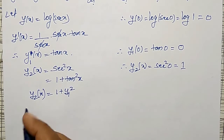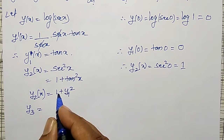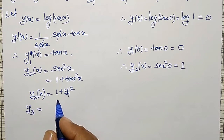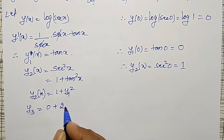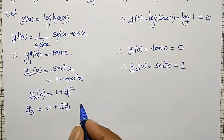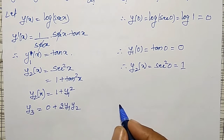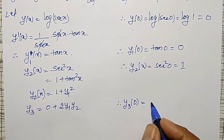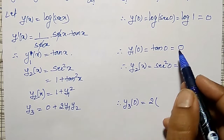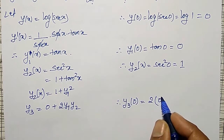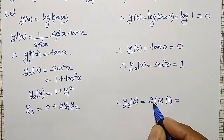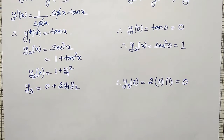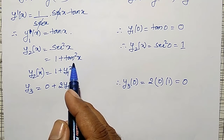Now to find y3, differentiate y2 equals 1 plus y1 squared. y3 is equal to the differential of 1 plus y1 squared, which gives 0 plus 2y1 into y2. Therefore my y3 at x equal to 0 is 2 times y1(0) times y2(0). y1 at 0 is 0, and y2 at 0 is 1, but the product becomes 0. That's why using 1 plus tan squared x makes it simple.